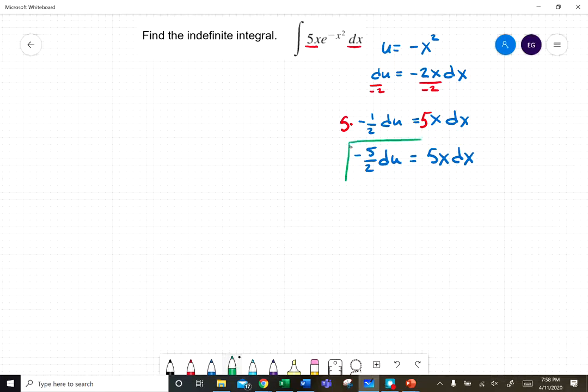So we'll use this substitution: the 5x dx will become a negative 5/2 du, and the negative x squared will become a u. Let's apply our u-substitution.